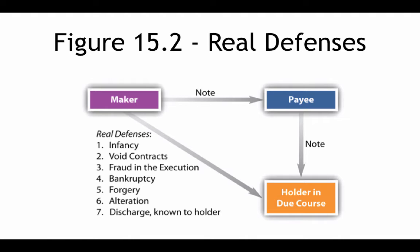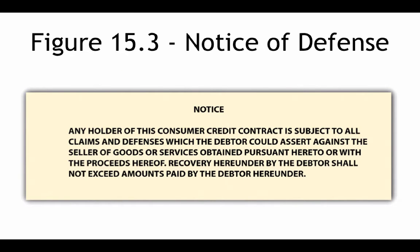Most of the real defenses are self-explanatory. For example, bankruptcy: if the debt is discharged in bankruptcy, that is a defense against enforcement of the note. Regarding the FTC notice, the HDC's special status isn't available in consumer credit transactions, because the FTC was trying to deal with consumer fraud around claims and defenses.